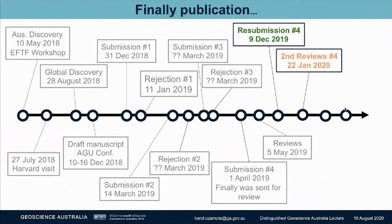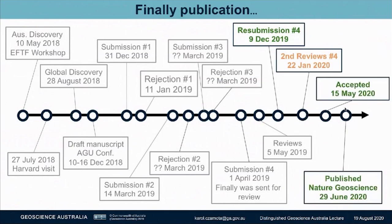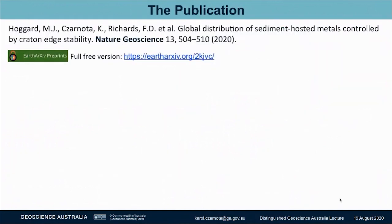It was sent out for review again. This time, it passed provided some additional tweaks, and the final manuscript was accepted on the 15th of May and published on the 29th of June 2020. If you want to get a hold of these treasure maps for Australia and for the world, you can go to Nature Geoscience, or a free preprint is available on EarthArXiv on this link here.